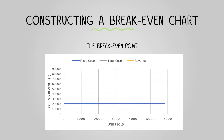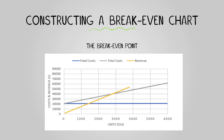Draw the fixed costs as a horizontal line at the level we've identified them to be. Draw the variable costs as a line starting at the same height as the fixed costs and rising diagonally according to the variable costs per unit. This plotted line then becomes the total costs line.